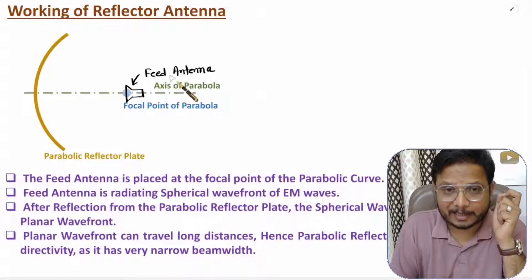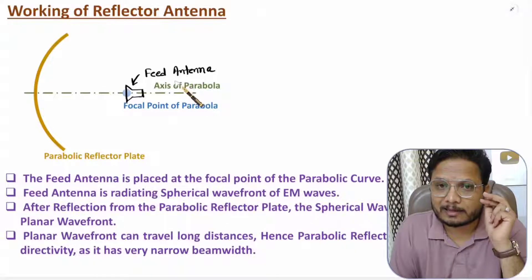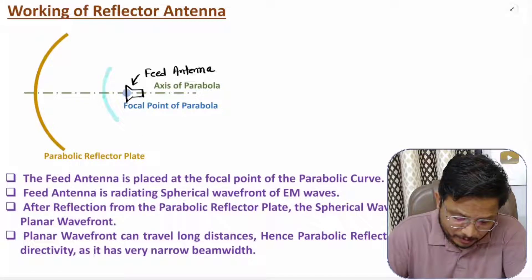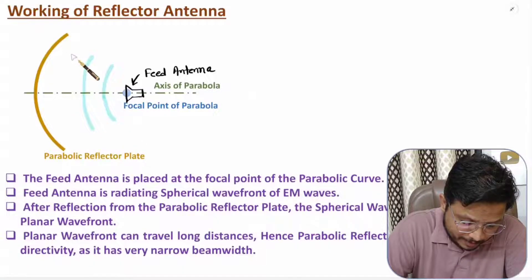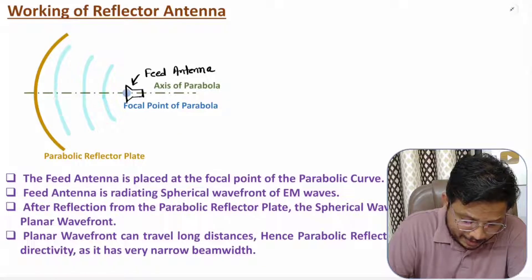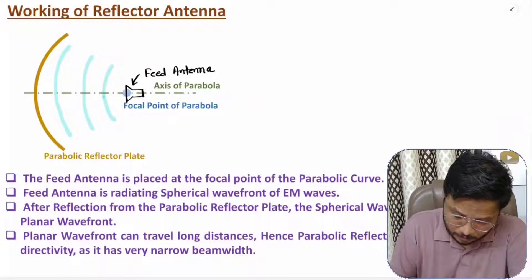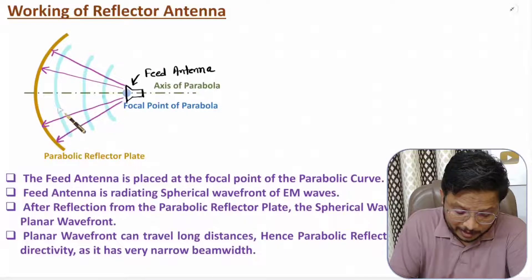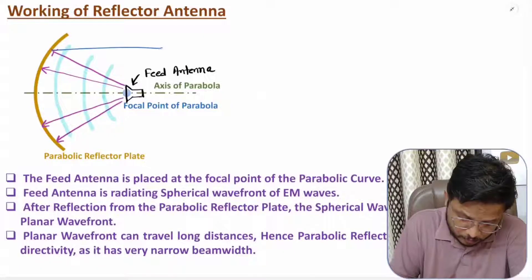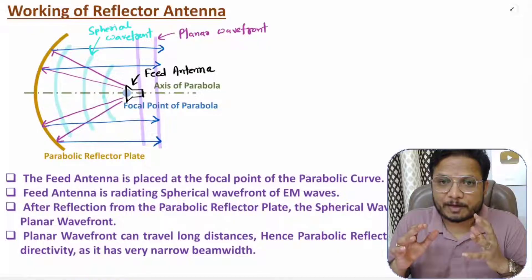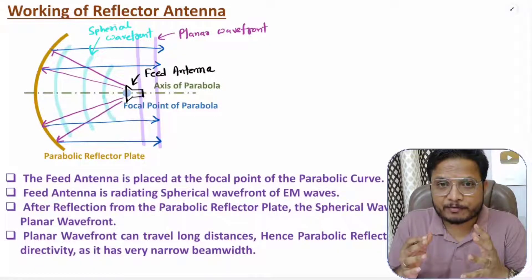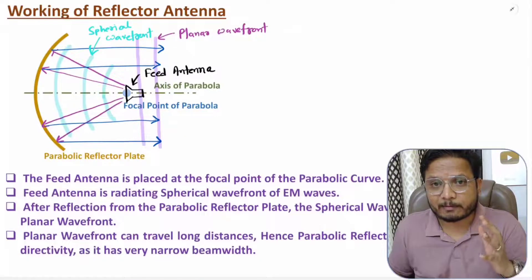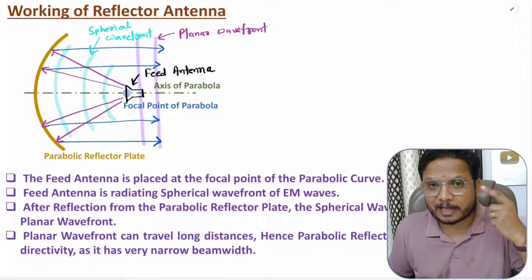The feed antenna radiates EM waves having spherical wavefronts. These spherical wavefronts are reflected from the parabolic reflector plate and converted into planar wavefronts. Essentially, the reflector antenna converts spherical wavefronts into planar wavefronts, by which one can achieve highly directional properties. The directivity of a parabolic reflector antenna can be 40 dB and even beyond.